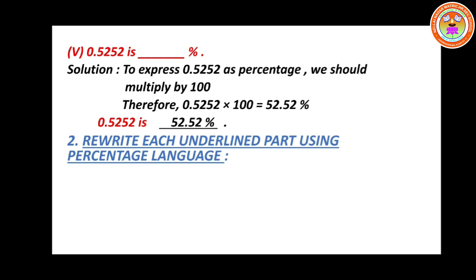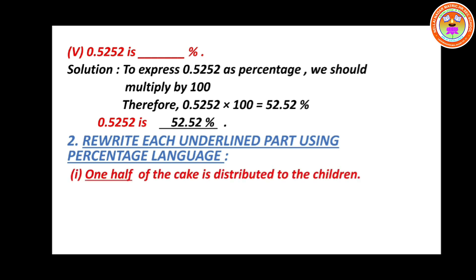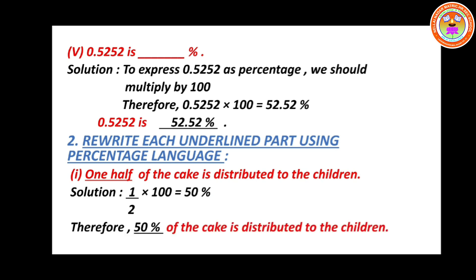Second section: Rewrite each underlined part using percentage language. Question 1: One half of the cake is distributed to the children. Solution: 1/2 into 100 — cancelling 2 and 100 by 50 — gives 50%. Therefore, 50% of the cake is distributed to the children.